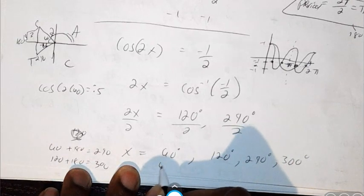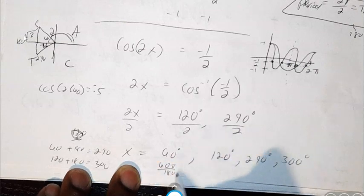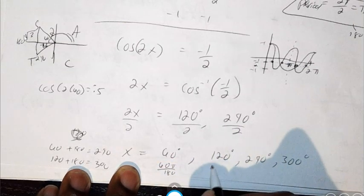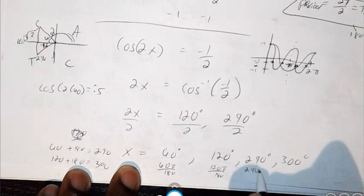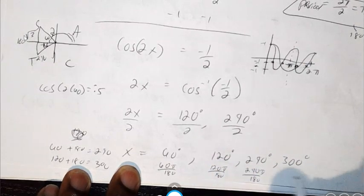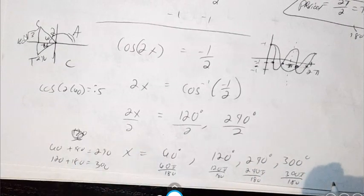So basically, if you remember to change to radians, you multiply by pi over 180. So the exact value is 60 pi over 180 or 120 pi over 180 or 240 pi over 180 or 300 pi over 180. So that's exact.